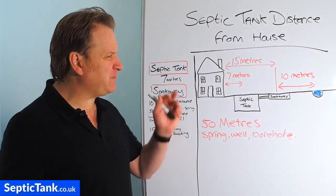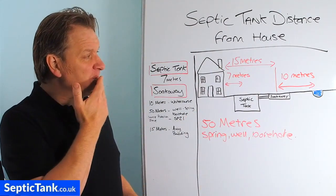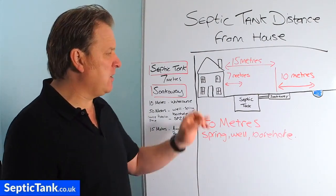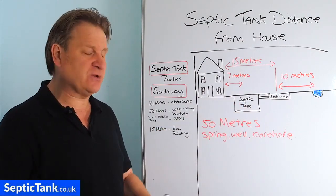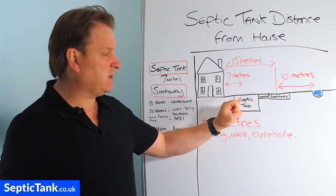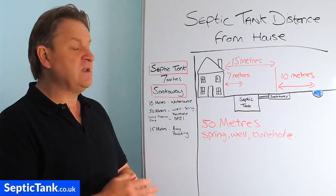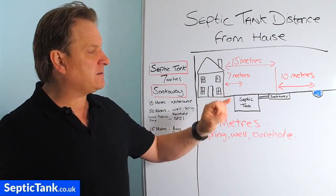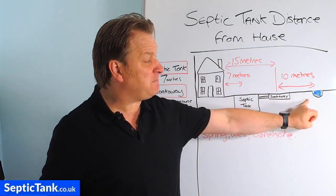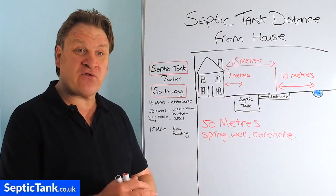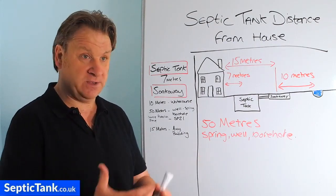Why does the soakaway have to be so far away from rivers and springs and boreholes? Basically it's pollution. All the waste goes into a septic tank — which we call effluent or wastewater — and that effluent, raw sewage, goes from the septic tank into the soakaway. The British government have deemed that once the raw effluent has soaked away through the soil and traveled 10 meters through the soil, it's been treated sufficiently that it doesn't pose a pollution risk to human beings or the countryside.